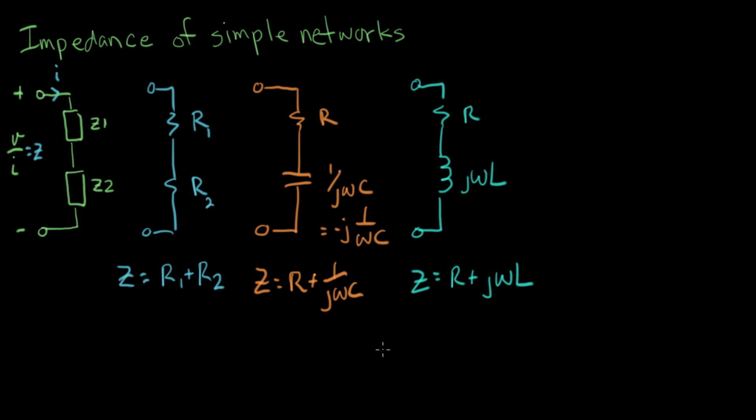Now what I want to do next is introduce some new terminology that we talk about impedances with. Let's look at these two examples for the capacitor and the inductor. R is a real number. One over j omega C, that's an imaginary number. And together they make a complex number. And over here with the inductor we see the same thing, a real part and an imaginary part.